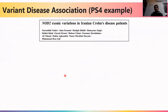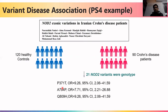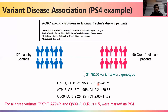For a PS4 example, in an Iranian Crohn's disease patient cohort study by Naderi et al., 120 healthy controls and 90 Crohn's disease patients were genotyped for 21 CARD15 (NOD2) variants. Three mutations had very high odds ratios above 5: P371T and Q809H had an odds ratio of 9.26, and A794P had 7.71. All had confidence intervals greater than 2. Therefore, all three variants are marked as PS4.